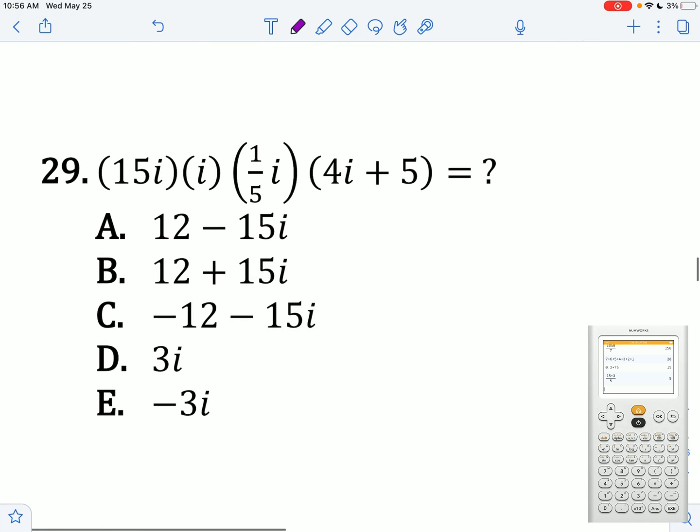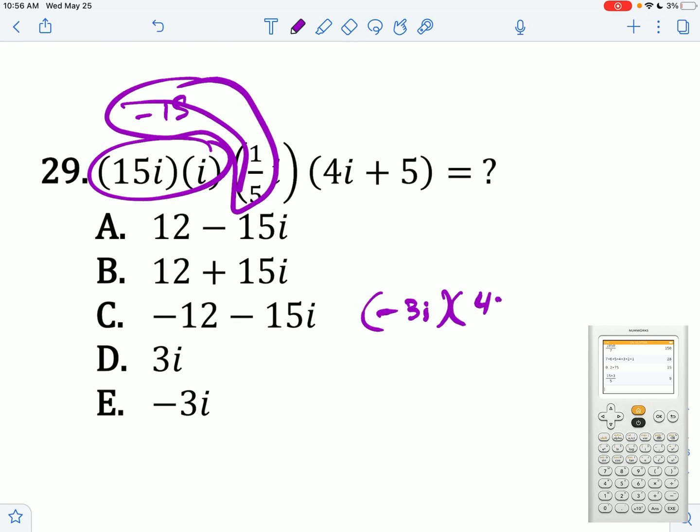15i times all of this. This is just going to give me negative 15, because 15i² is just negative 15. And then negative 15 times 1 over 5 is going to give me negative 3. So we really have negative 3i times 4i plus 5. We get negative 12i² minus 15i. That's 12 minus 15i.